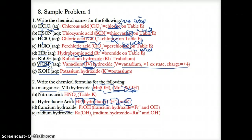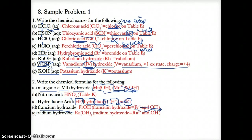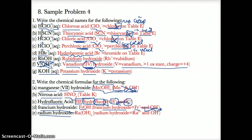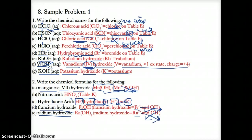For francium hydroxide: francium has one oxidation state, Fr+. Hydroxide is OH-. Crisscross the charges to get FrOH. For radium hydroxide: radium has one oxidation state of 2+. OH has one oxidation state of minus one. Crisscross the charges to get Ra(OH)2.